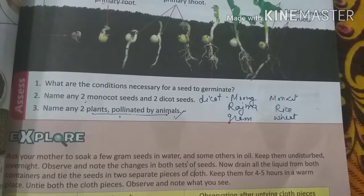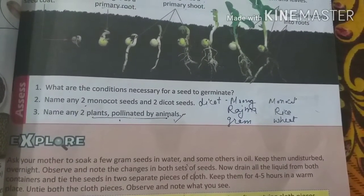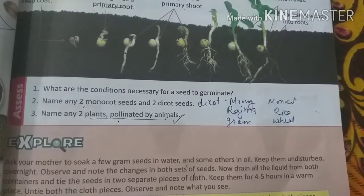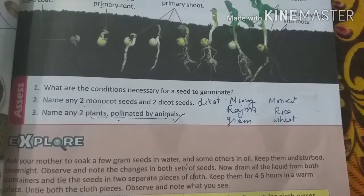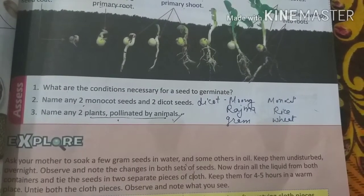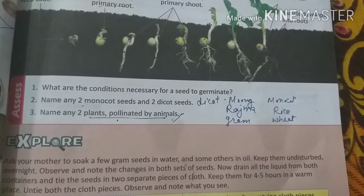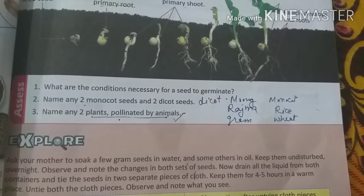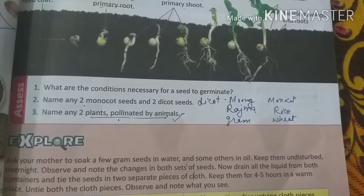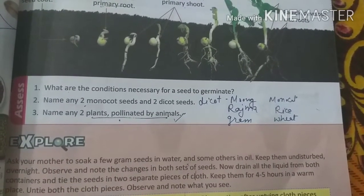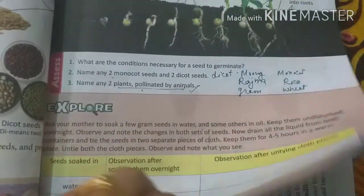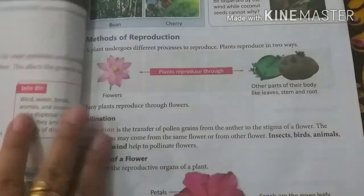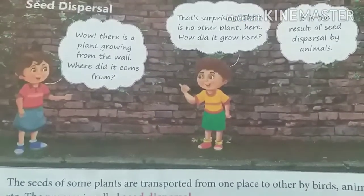Name any two monocot seeds and two dicot seeds. Seeds that can divide into two parts — such as rajma and gram — are dicots. Rice and wheat are monocots. Seeds that can divide into two parts are called dicot, and seeds that cannot be divided into two parts are called monocot.